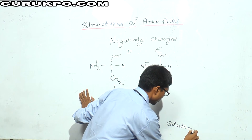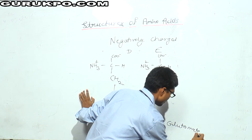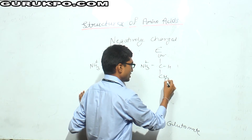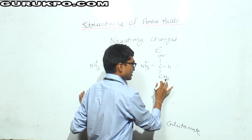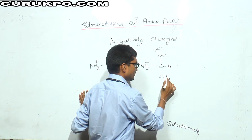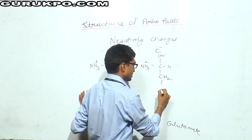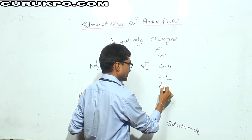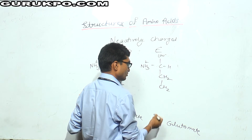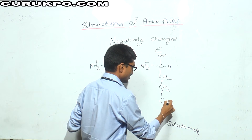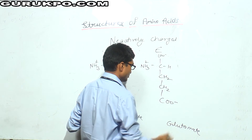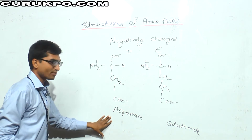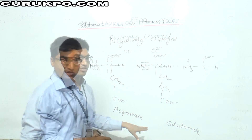The structure of glutamate can also be formed from alanine. From alanine, replace one H group, place one CH2 group, and thereafter a COO⁻ group. This is the structure of aspartate and glutamate.